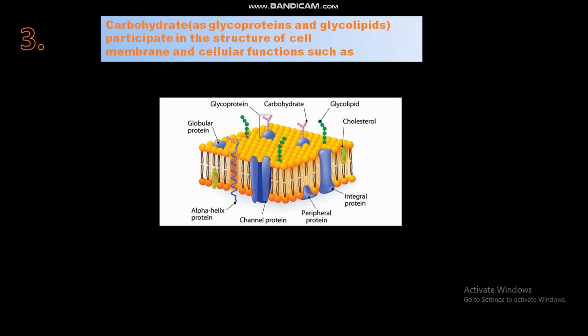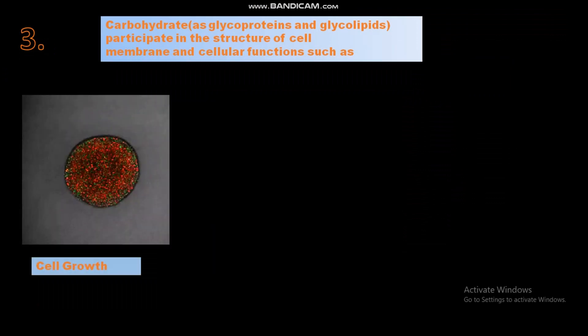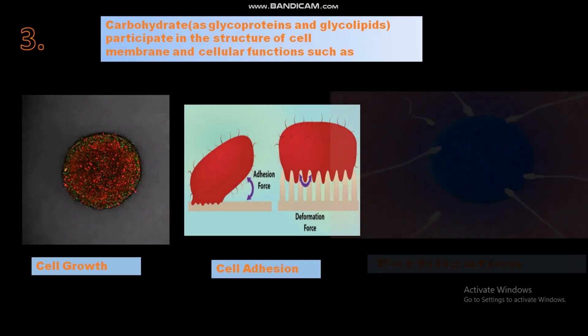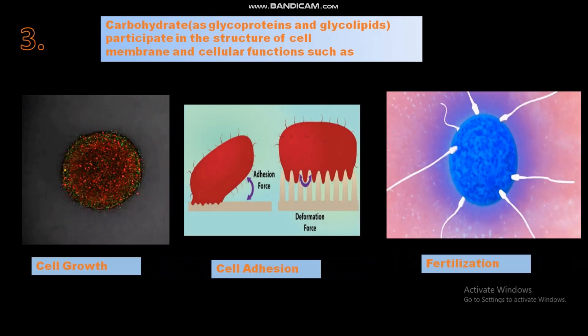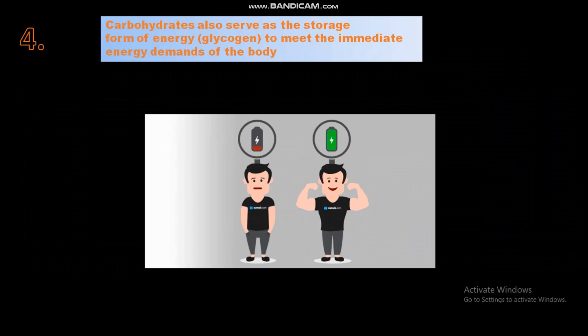Carbohydrates as glycoproteins and glycolipids participate in the structure of the cell membrane and cellular functions such as cell growth, cell adhesion, and fertilization. Carbohydrates also serve as the storage form of energy — glycogen — to meet the immediate energy demands of the body.